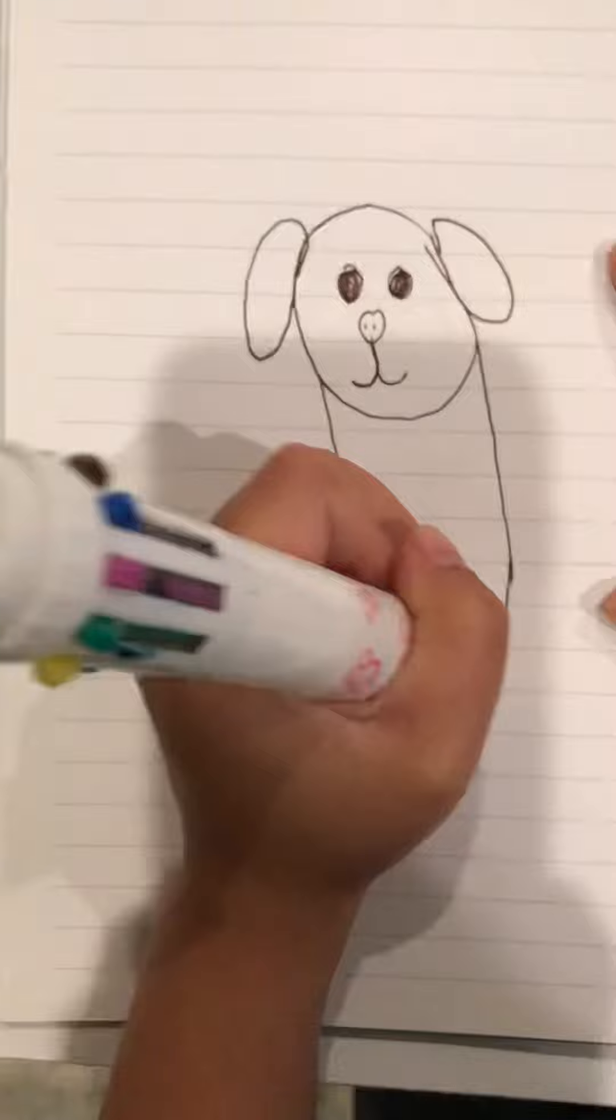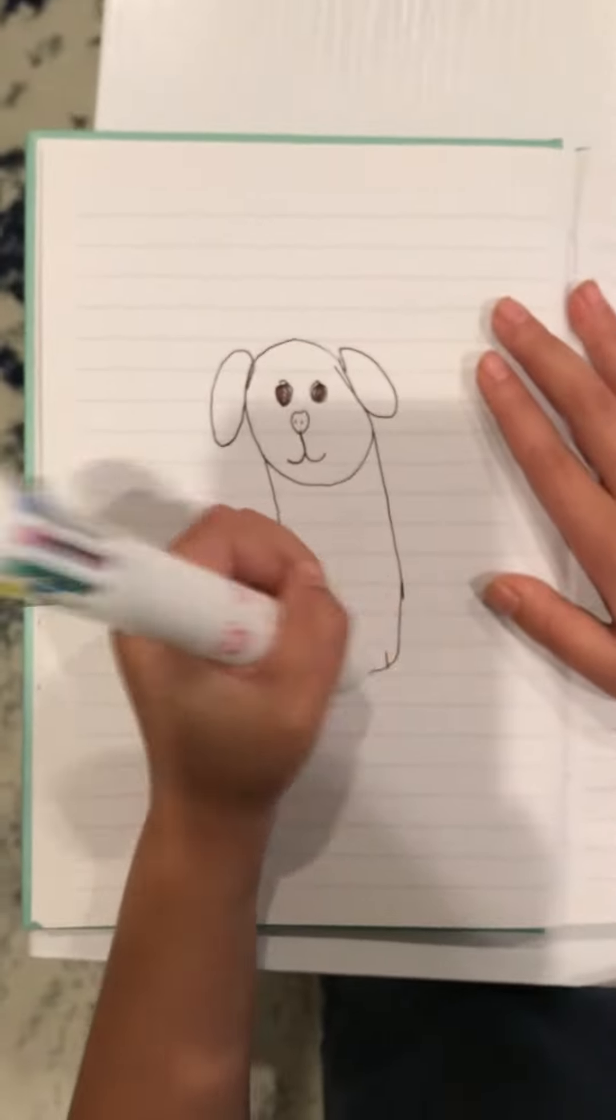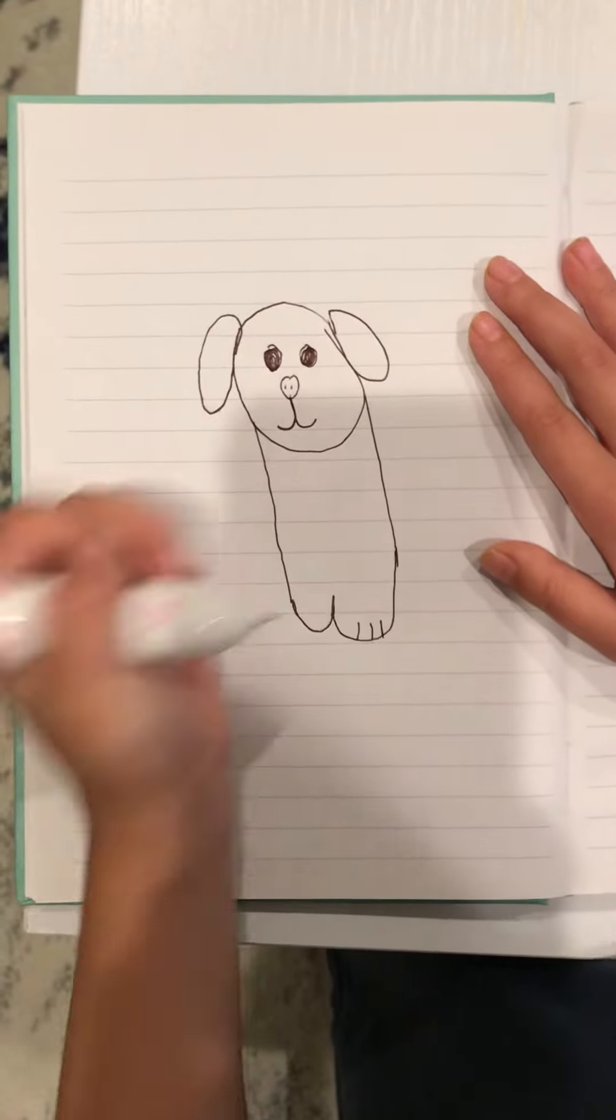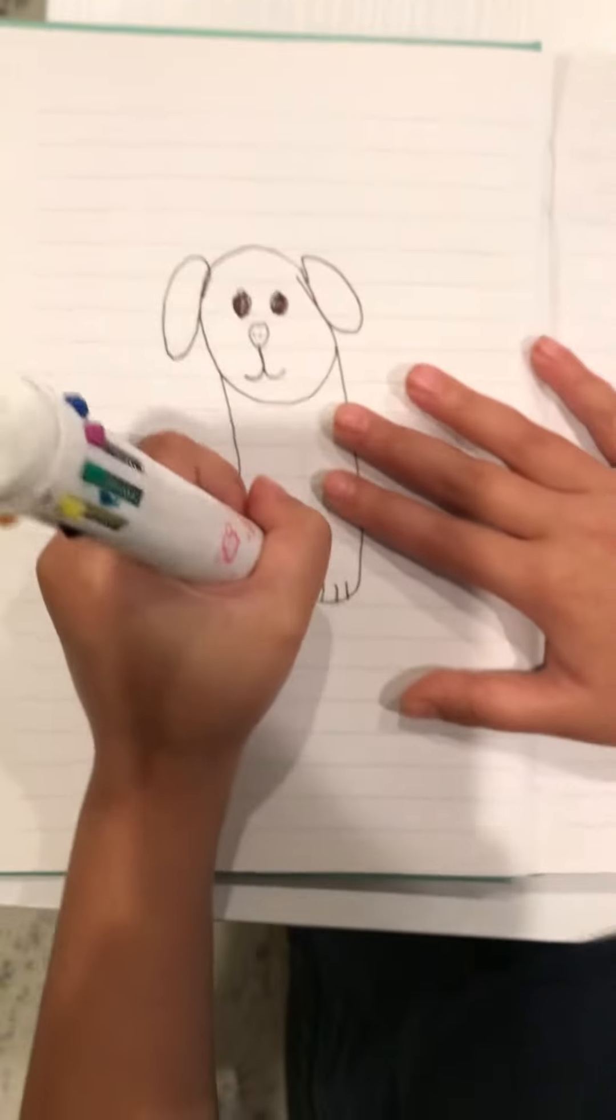Then for the nails, you should put one, two, three lines on the feet and the other.